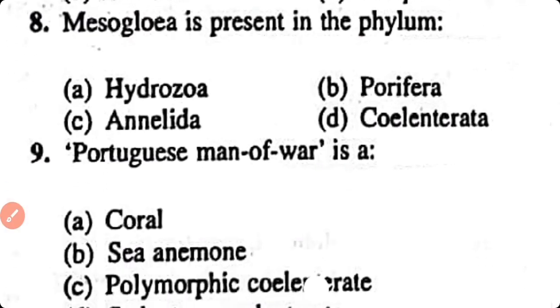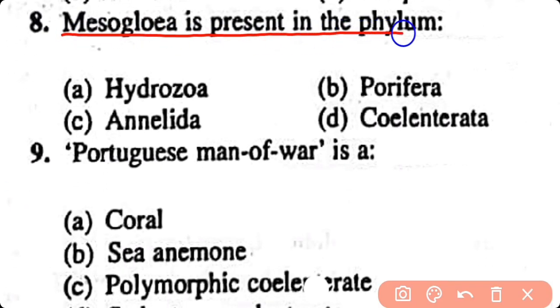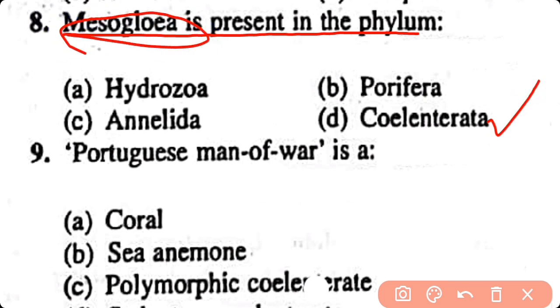Question number 8. Mesoglia is present in the phylum: Hydrozoa, Porifera, Annelida, Cnidaria. Correct answer is option D. Mesoglia is a tissue that is present in Cnidaria and it functions like a hydrostatic skeleton.